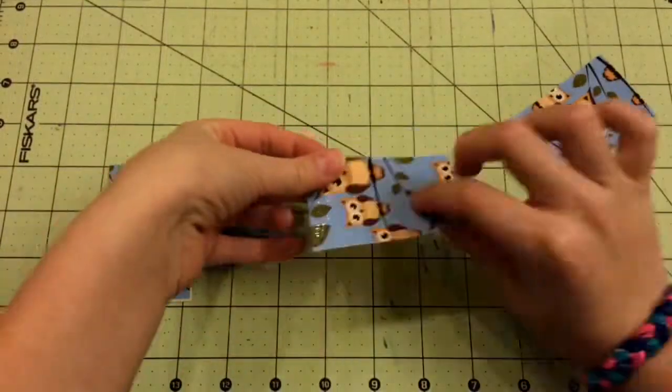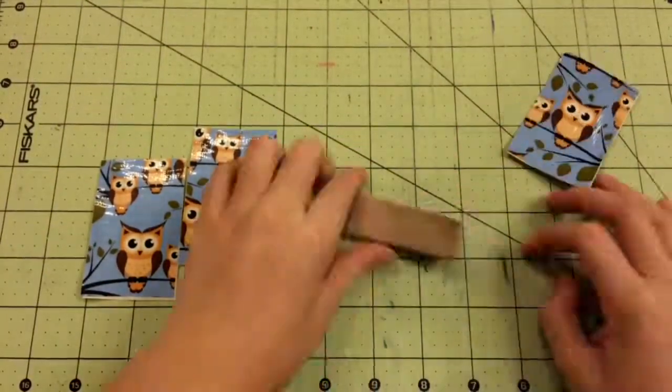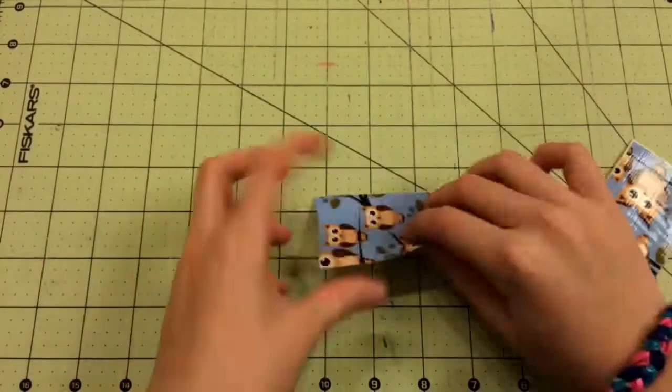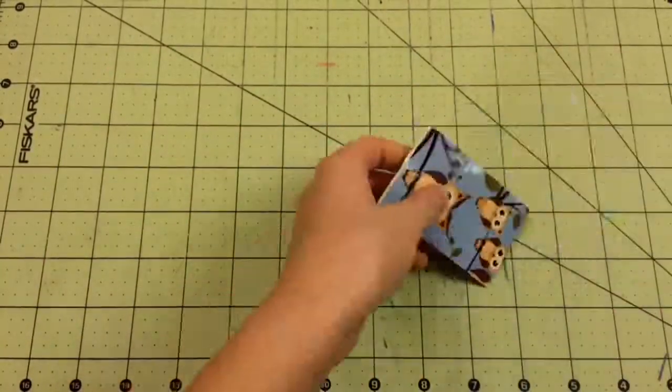Once you're done with that, fold them all in half where the print side, my owl side, is facing together.